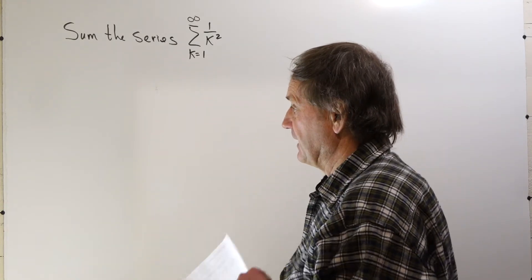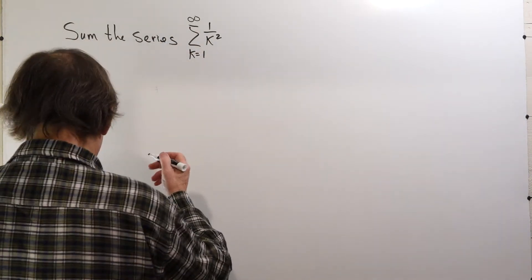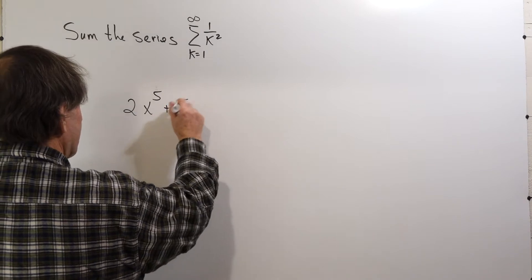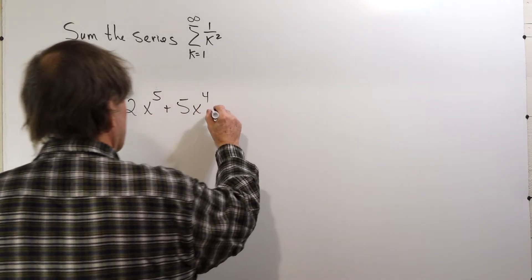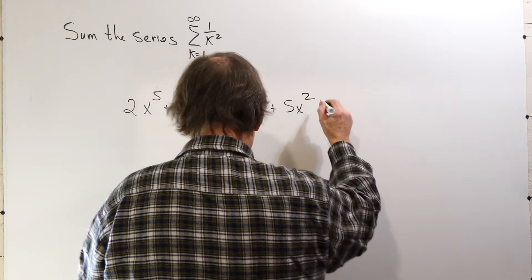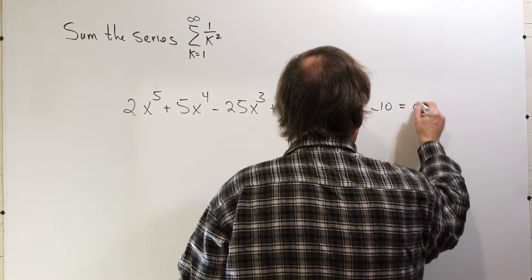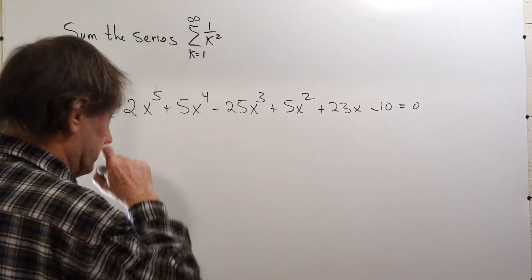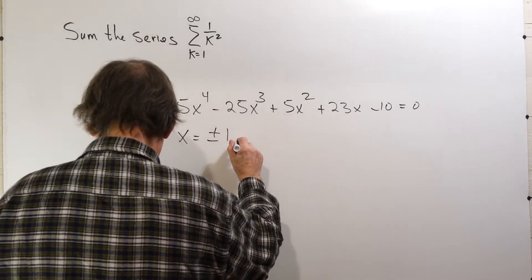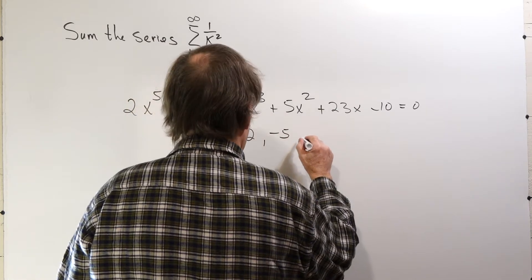One of the facts that Euler uses is this: if I have a polynomial — let's take a fifth-order polynomial — 2x to the fifth plus 5x to the fourth minus 25x cubed plus 5x squared plus 23x minus 10 equals zero. The roots of this equation are x equals plus or minus 1, 2, negative 5, and positive one-half.